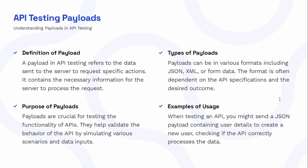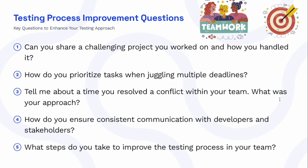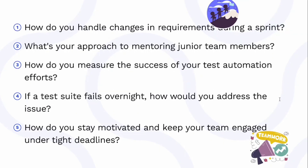The next set covers testing process improvement and behavioral questions. These include: can you share a challenging project and how you handled it? How do you prioritize tasks when juggling multiple deadlines? How did you resolve a conflict within your team? How do you ensure consistent communication with developers and stakeholders? What steps do you take to improve the testing process? How do you handle requirement changes during a sprint? What is your approach to mentoring junior team members? How do you measure the success of your test automation efforts? If a test suite fails overnight, how would you address it? How do you stay motivated under tight deadlines?